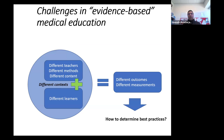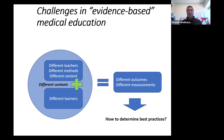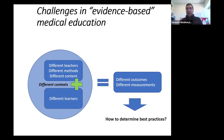We like to be evidence-based in medicine and in medical education, but it can be challenging. The problem in making sense of what's published is that the teachers, teaching methods, content, context, and learners are all different. The outcomes and measurements are all different too. So how do you figure out from the medical education literature what the best practices or checklist items are?